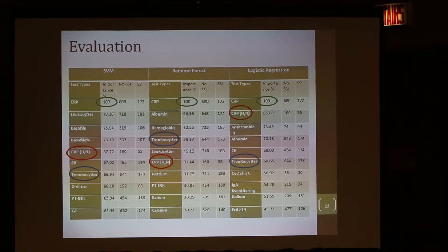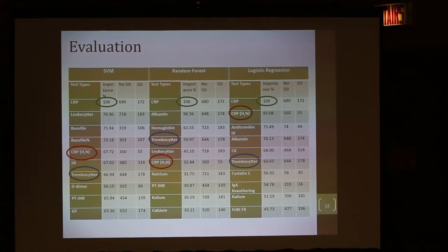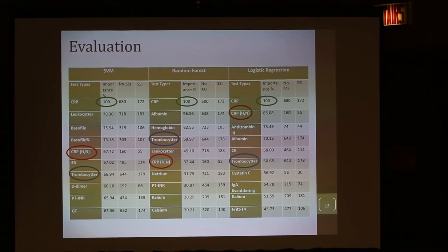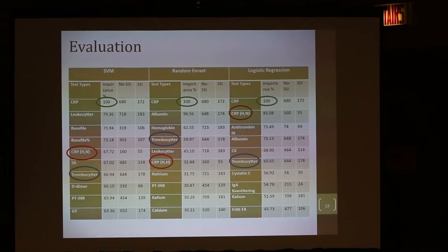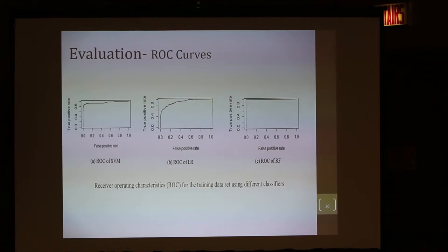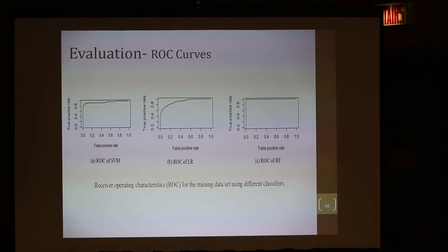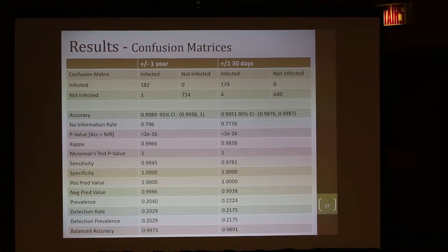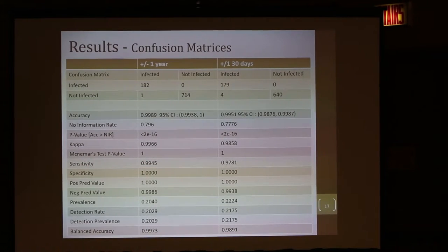Most of the top features are already what's clinically practiced. CRP was number one. CCRPHN was also there in most of the models. Thrombocytes — platelets — were also implicated, and there's already evidence that they act as double-edged swords in spreading infection. The AUC, especially in the random forest, was more than 90%. And the confusion matrix shows sensitivity and specificity were more than 90%, including positive and negative predictive values.